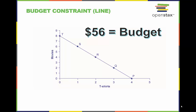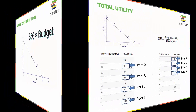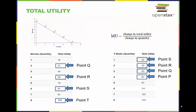This constraint on the consumer is called the budget constraint and can be represented by the graph we see here. Let's take Jose for example. He has an income of fifty-six dollars — this represents his budget. Jose consumes two items: movies and t-shirts. Movies cost seven dollars a piece and t-shirts cost fourteen dollars a piece. The points on the budget constraint line show the combinations of movies and t-shirts that are affordable to Jose.